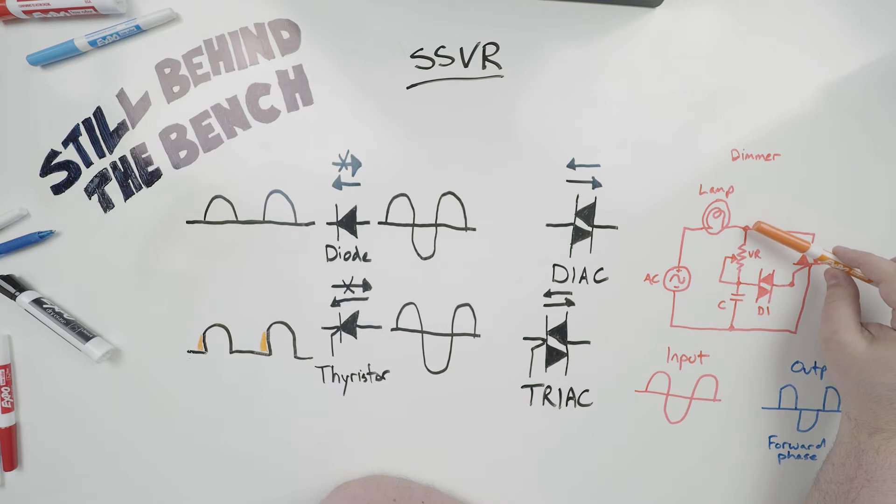So what happens is, you turn on the power, this variable resistor controls how quickly this capacitor charges. Once the capacitor gets to just about fully charged, it will trigger this DIAC.